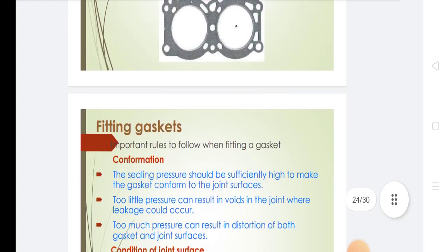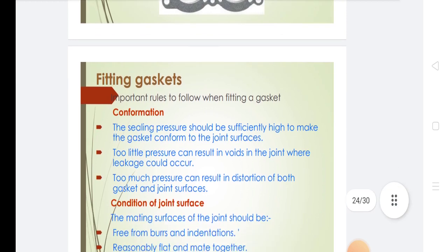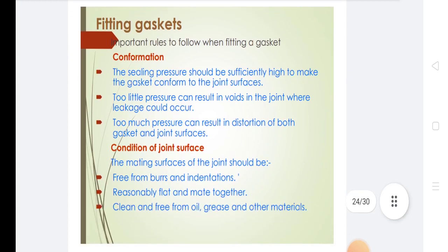Fitting gaskets: Important rules to follow when fitting a gasket include conformation—the sealing pressure should be sufficiently high to make the gasket conform to the joint surface. The condition of joint surfaces is important: the mating surfaces should be free from burrs and indentations.